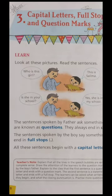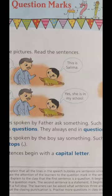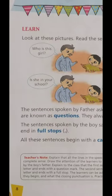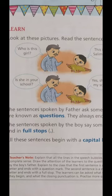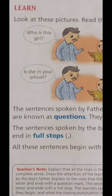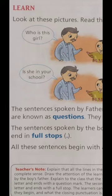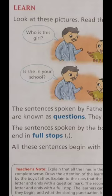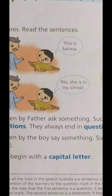All these sentences begin with a capital letter. We can see that these sentences use capital W for WHO - because WHO is the first word of the sentence, and the first letter W is written as a capital. Similarly, capital I is used because it is the first letter of that sentence, and capital T is used where T is the first letter.